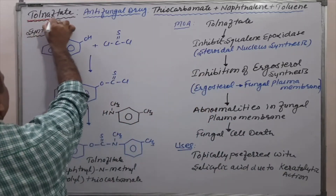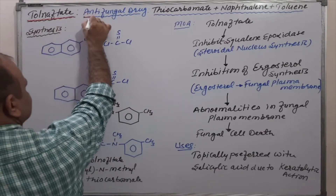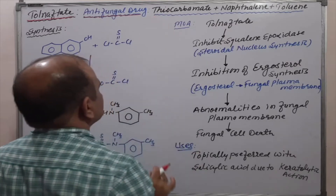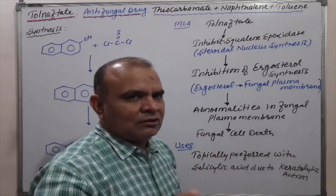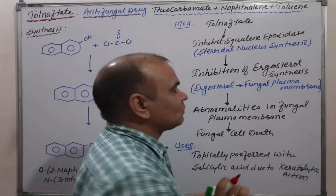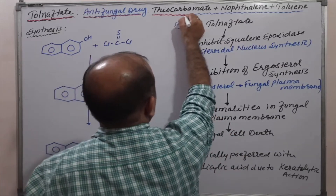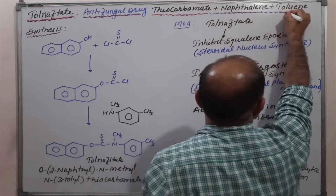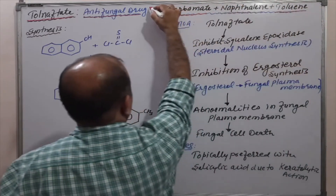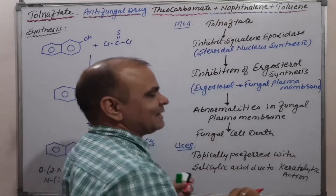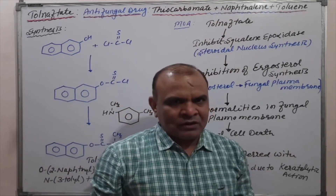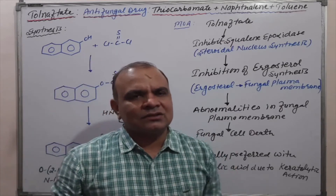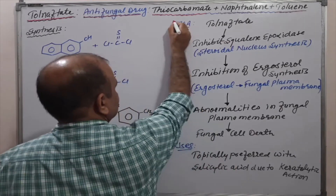Tolnaftate is an antifungal drug. In terms of its functional groups and structure, tolnaftate is composed of thiocarbonate, naphthalene, and toluene components. If you can remember these three things, you can easily remember the structure of tolnaftate.